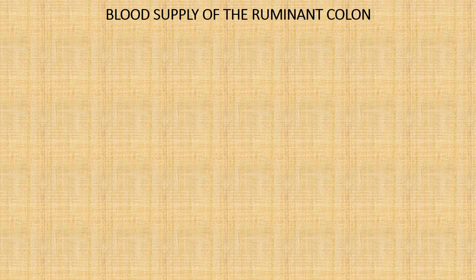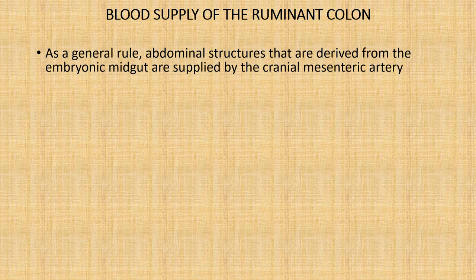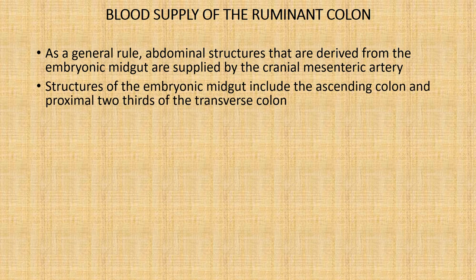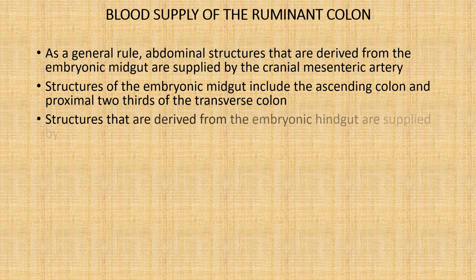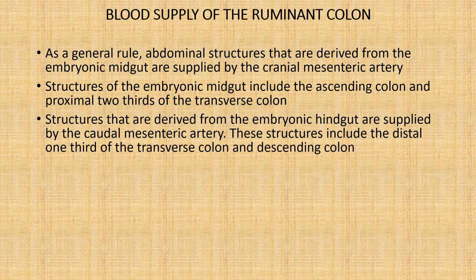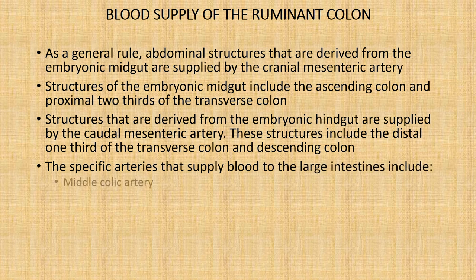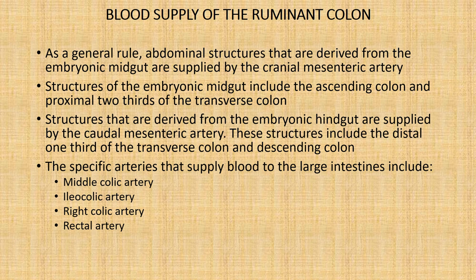The two major blood vessels supplying the large intestine of ruminants are the cranial mesenteric artery and the caudal mesenteric artery, both direct branches of the abdominal aorta. As a general rule, structures derived from the embryonic midgut — including the ascending colon and the proximal two-thirds of the transverse colon — are supplied by the cranial mesenteric artery. Structures derived from the embryonic hindgut — including the distal one-third of the transverse colon and the descending colon — are supplied by the caudal mesenteric artery. Specific arteries include the middle colic artery, the ileocolic artery, the right colic artery, and the rectal artery.